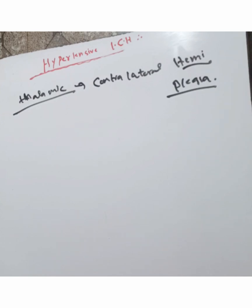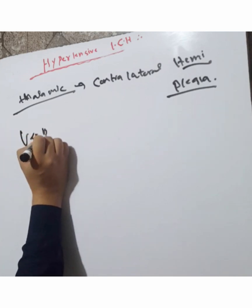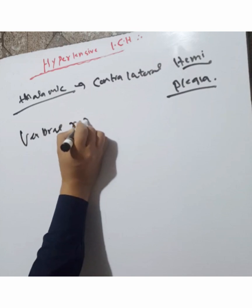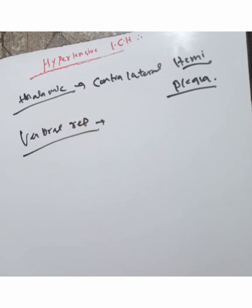A prominent sensory deficit involving all modalities is usually present. Aphasia is often preserved, and verbal repetition may occur. Aphasia does not occur, but verbal repetition occurs in thalamic hemorrhage.